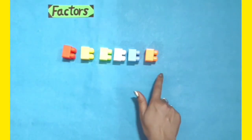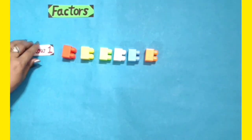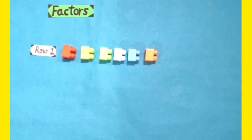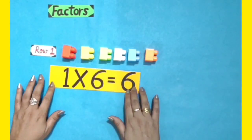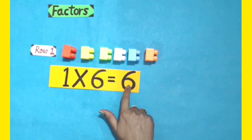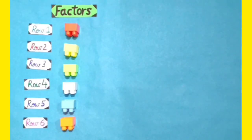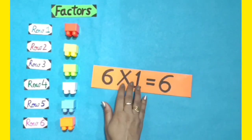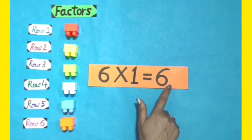I have 6 blocks with me. I have arranged these blocks in a row, so how can we represent it in a multiplication form? It can be represented as 1 into 6 is equal to 6. Now I have arranged these blocks in 6 rows with equal number of blocks in each row, so this can be represented as 6 into 1 is equal to 6.